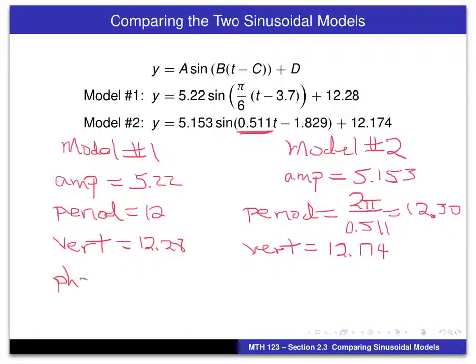And again, for the phase shift, for model number one, that's already set up. That's equal to 3.7.